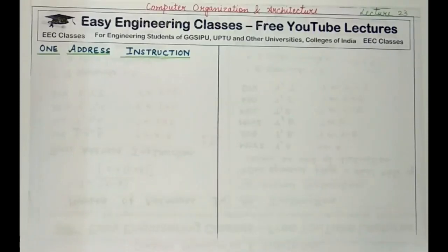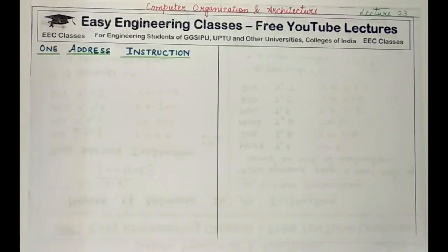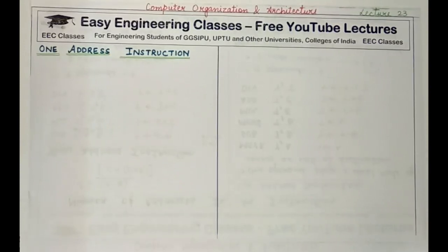Hello students, welcome to easy engineering classes. We will study this lecture as a continuation of the last lecture. In the last class, we have seen two address instructions. Now we will see what is a one address instruction, and then we will see another form of address instructions. Let's start with one address instruction.